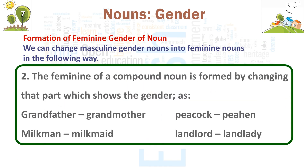2. The feminine of a compound noun is formed by changing the part which shows the gender: grandfather — grandmother, peacock — peahen, milkman — milkmaid, landlord — landlady.